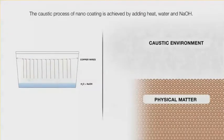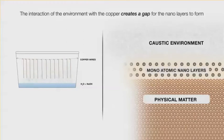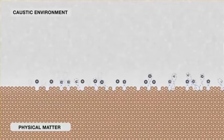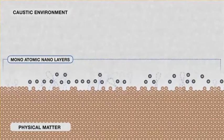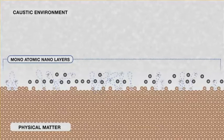The caustic process of nano-coating is achieved by adding heat, water, and sodium hydroxide. The interaction of the environment with the copper creates a gap for the nano layers to form. That caustic environment loosens the bonds between your different atoms so that they slightly reposition themselves — they're still attached to the matter but they have moved and changed their magnetical-gravitational position from direct contact.